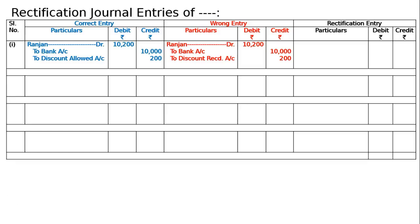This discount received is to be debited to nullify the effect, and discount allowed will come in its place. Discount received account debited — this is cancelled — and discount allowed account credited. It was credited by mistake, it will now be debited to cancel it, and discount allowed will again be credited. This is the rectification entry.